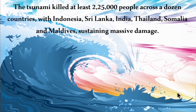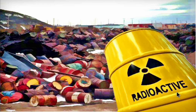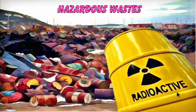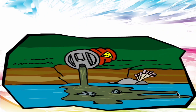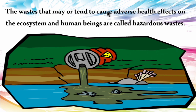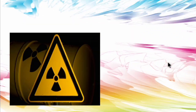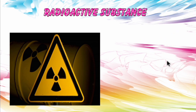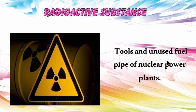The seventh major hazard is hazardous waste. Waste that may cause adverse health effects on the ecosystem and human beings is called hazardous waste. The first type is radioactive substances — the tools and used fuel pipes of nuclear power plants — which are a dangerous threat to people.